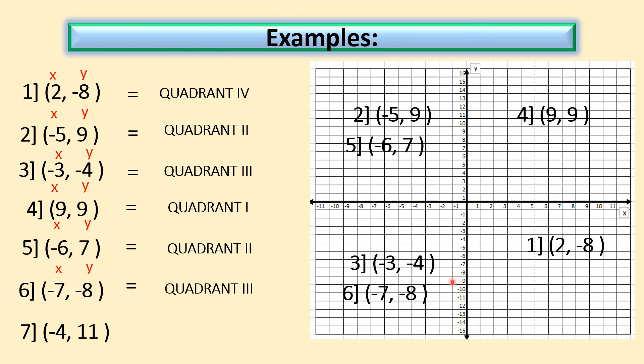Lastly, Example 7: (−4, +11). x is negative, so it's on the left; y is positive, going up — negative x and positive y means Quadrant 2. That's how easy it is to identify quadrants using the signs of the coordinates. Remember: labeling goes counter-clockwise — Quadrant 1, Quadrant 2, Quadrant 3, Quadrant 4. Thank you and keep safe!